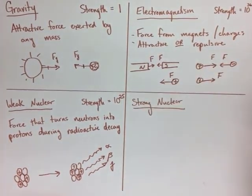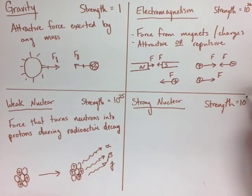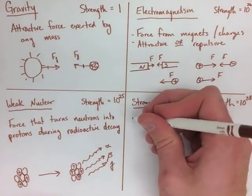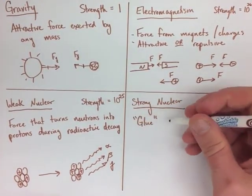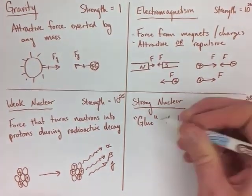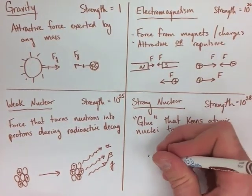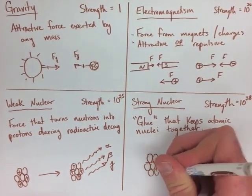The final force we're going to look at is strong nuclear. This has a relative strength of 10 to the 38. It's the strongest of our four forces, and it's the glue that holds a nucleus together. It keeps all of the stuff inside the nucleus, not allowing it to break up like it actually should.